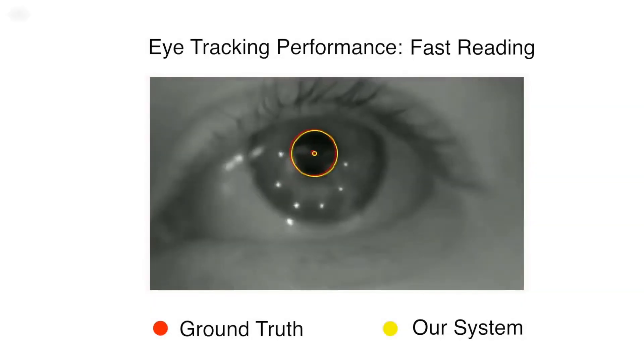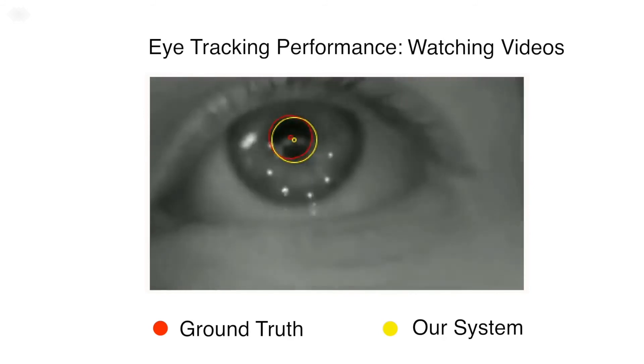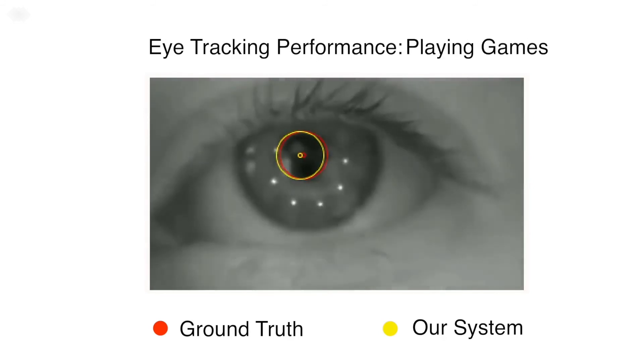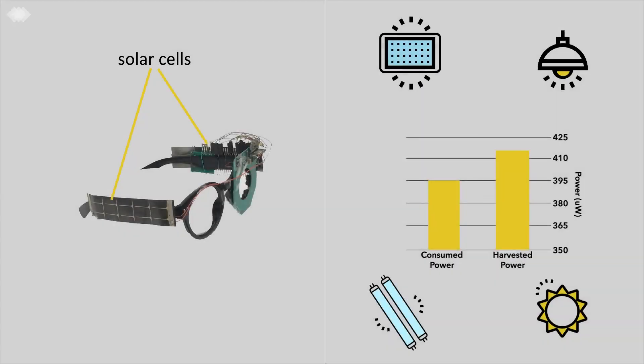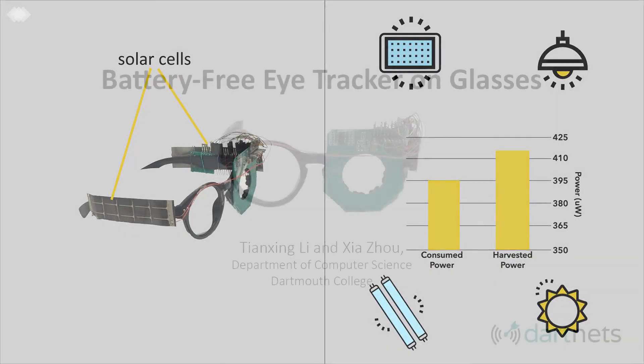Our prototype achieves millimeter tracking accuracy under various user activities. Above all, it harvests energy from ambient light in various conditions, supporting the whole system without a battery.